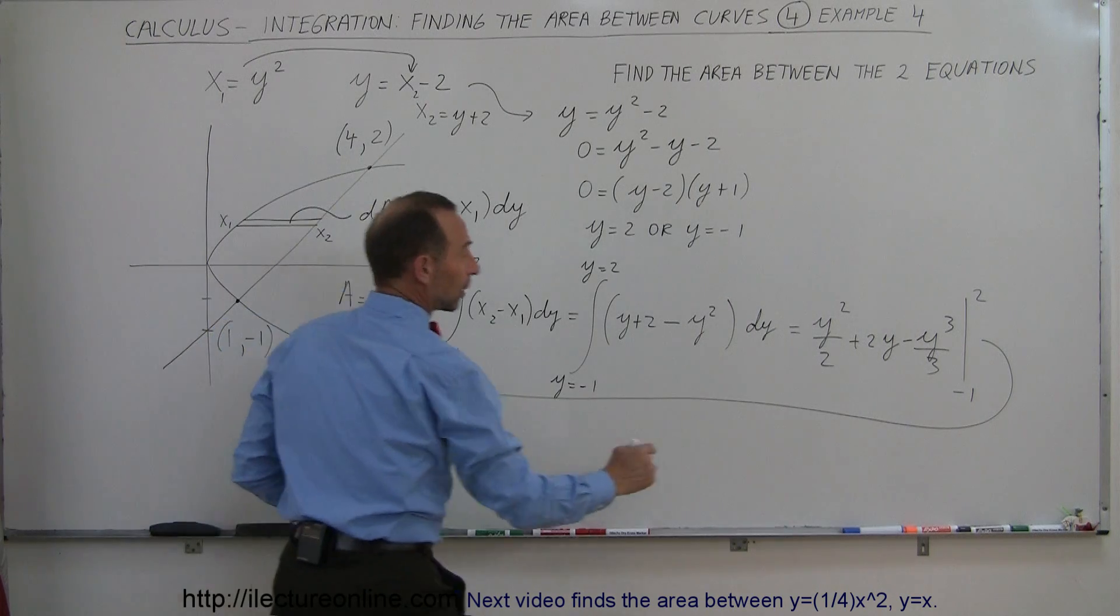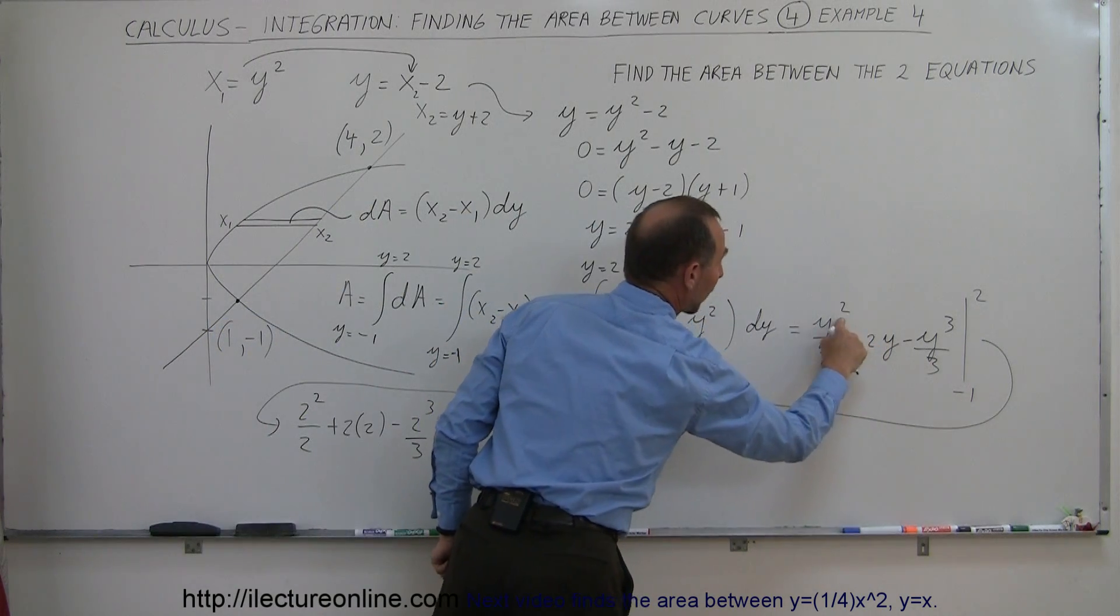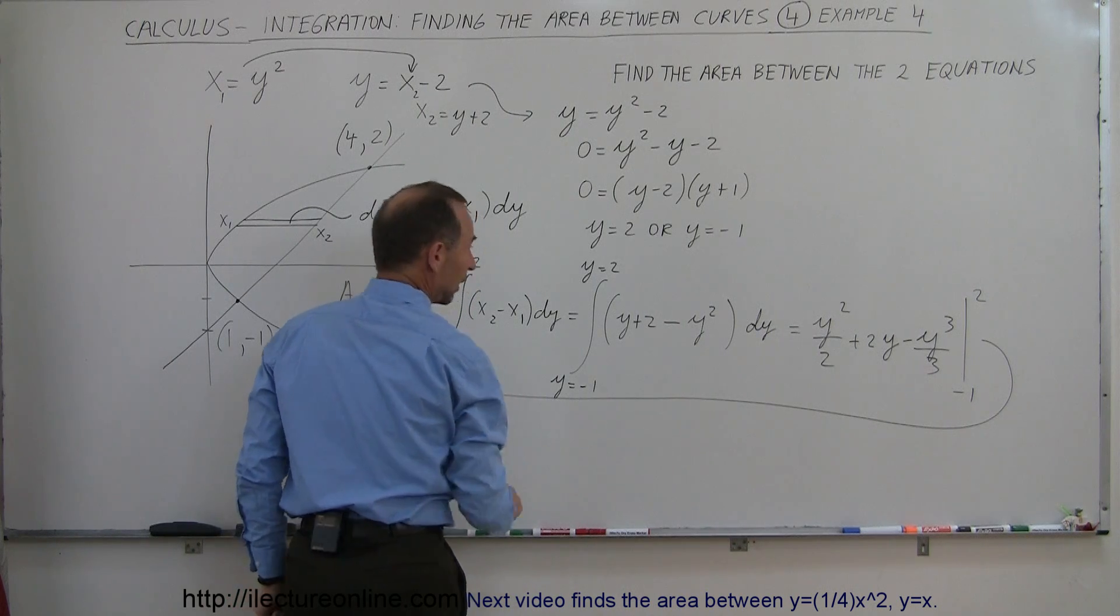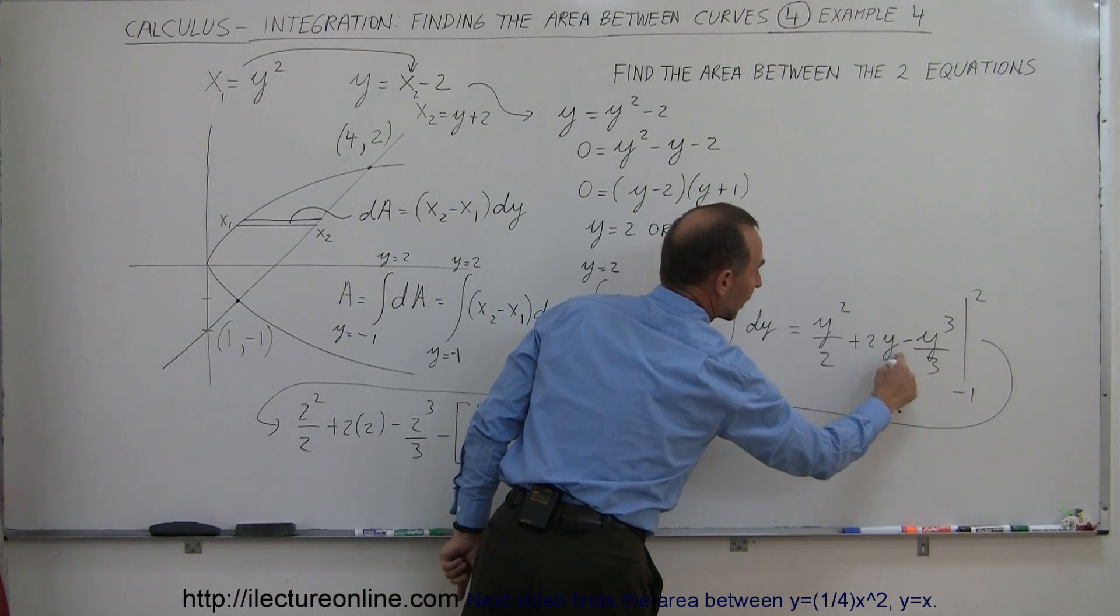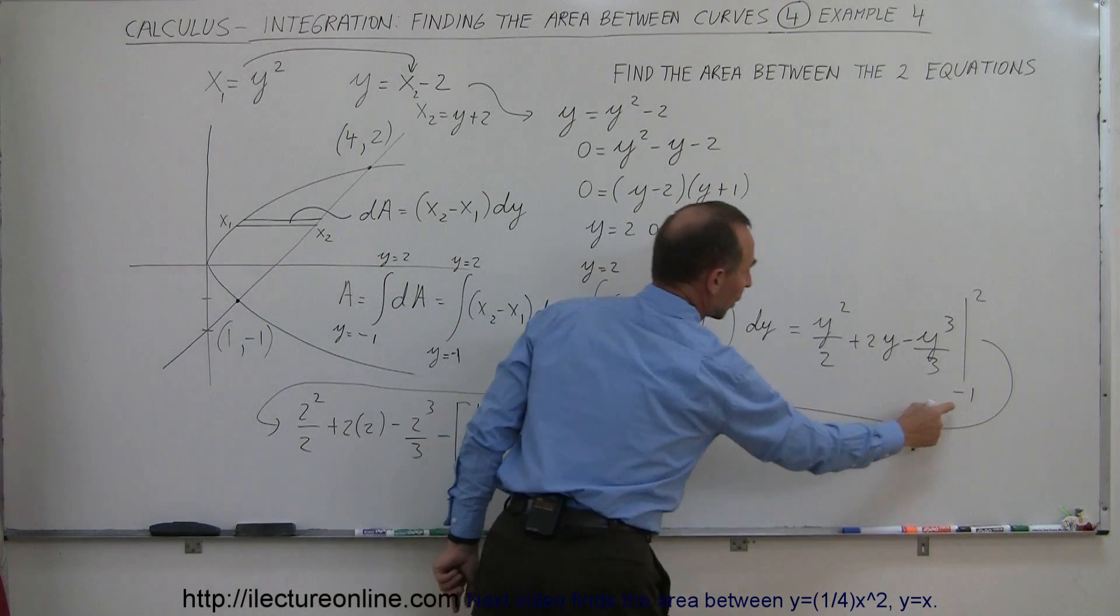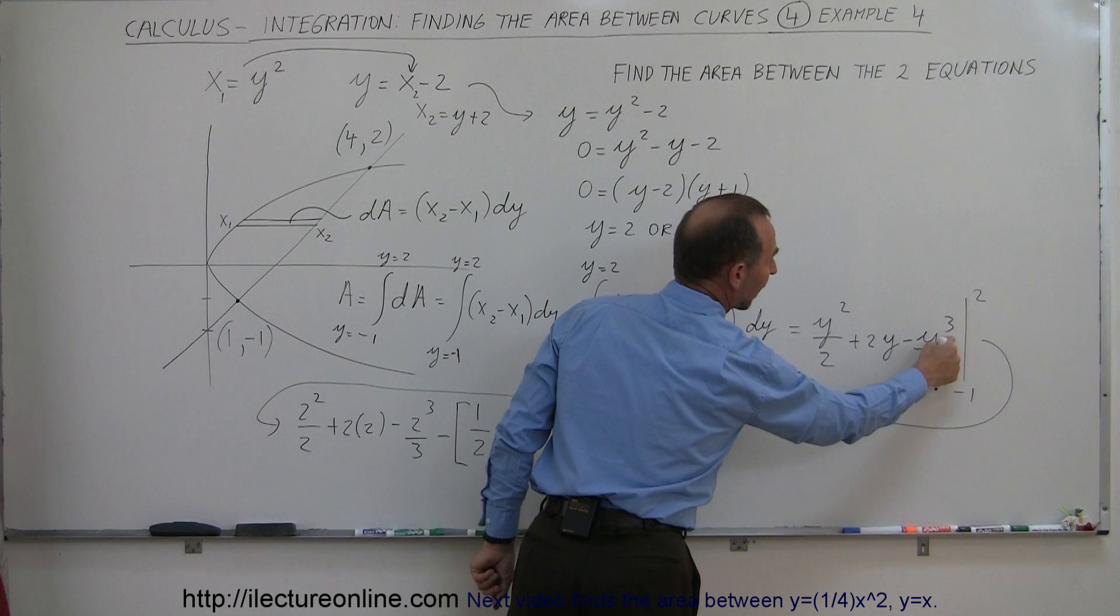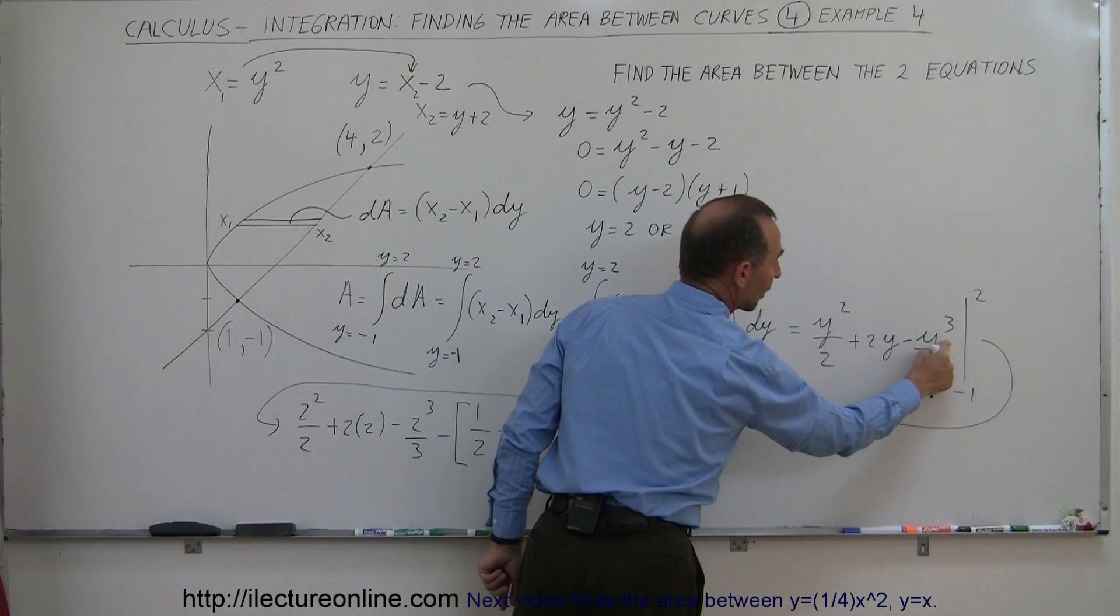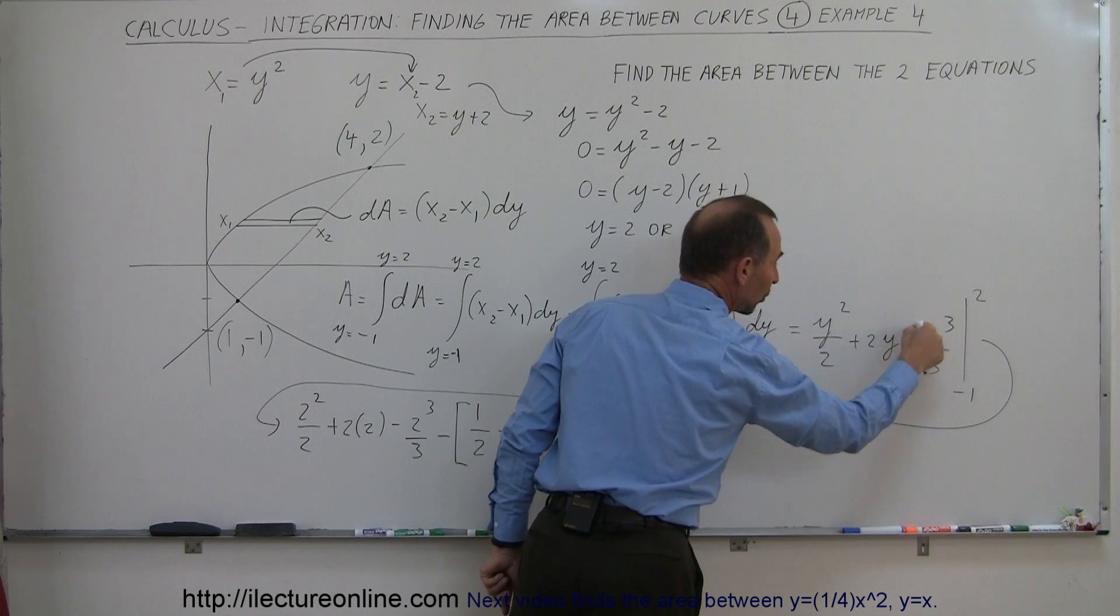So minus, when I plug in the lower limit, minus 1 squared, that would be plus 1 divided by 2. When I plug in the lower limit here, I get a minus y or minus 1 times 2 or minus 2. When I plug in the lower limit here, I get y cubed, that's minus 1 cubed, which is minus 1, times the minus 1 would be plus 1 over 3.